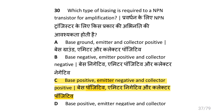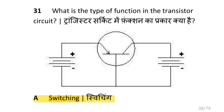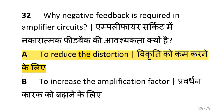Which type of biasing is required for an NPN transistor for amplification? i.e. base positive, emitter negative and collector positive. What is the type of function in a transistor circuit? i.e. switching.